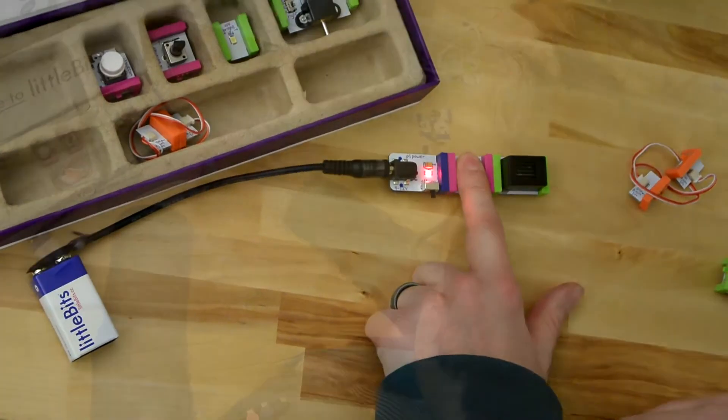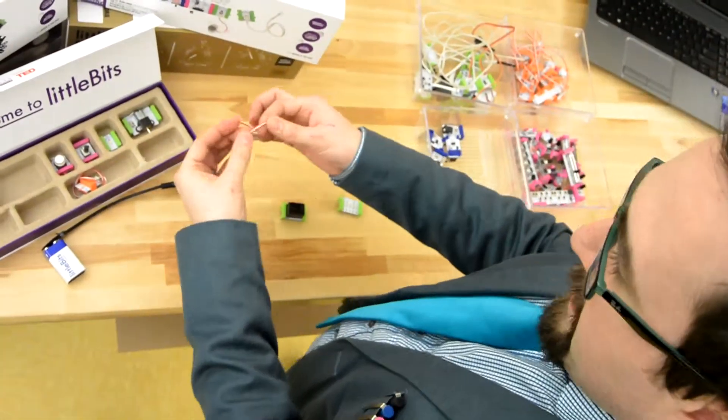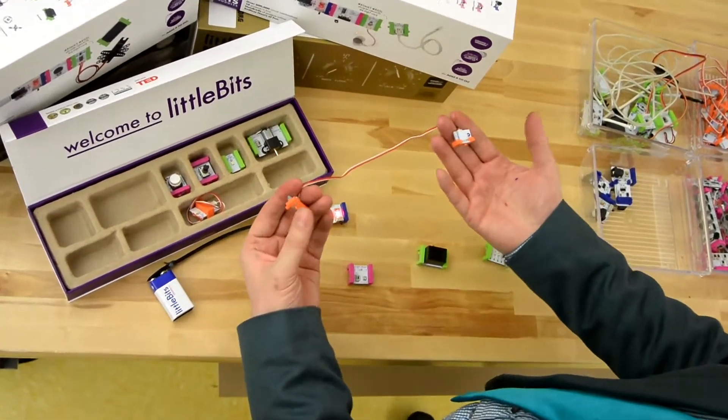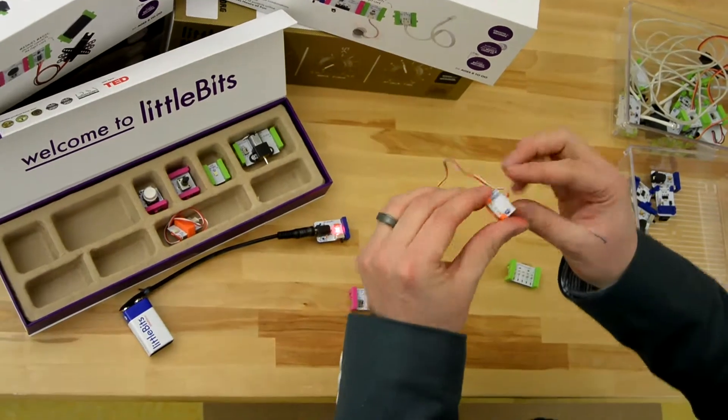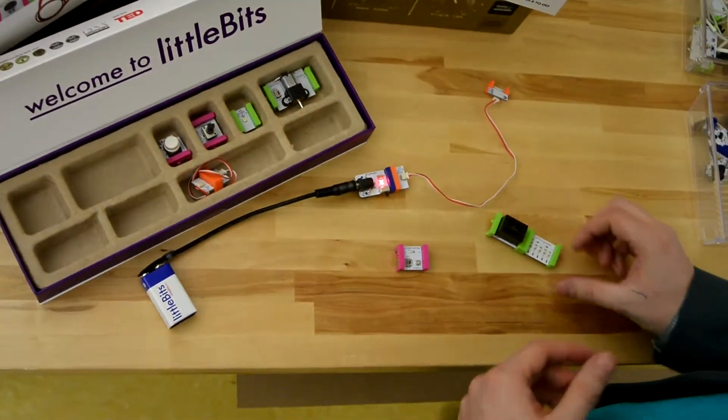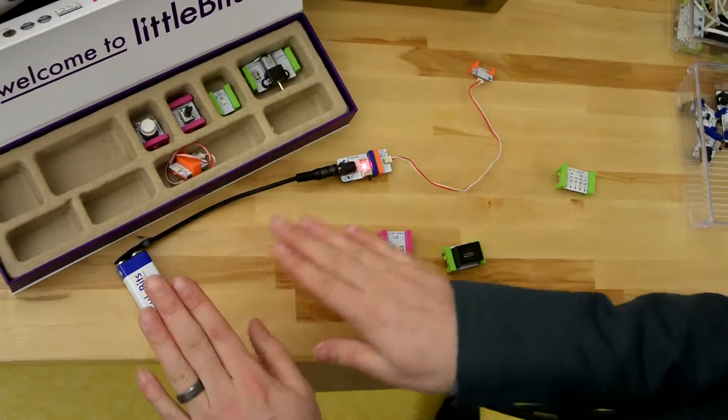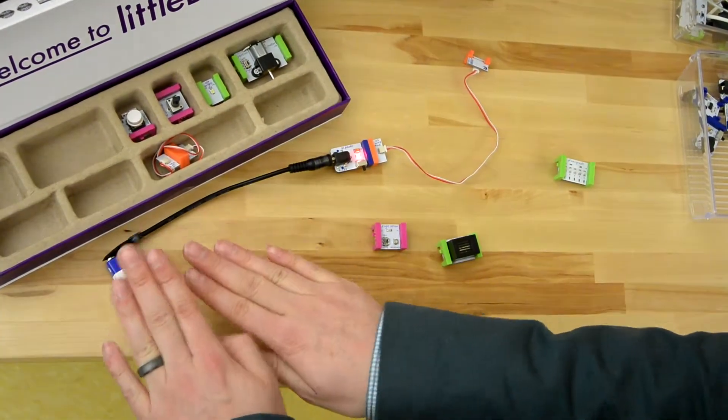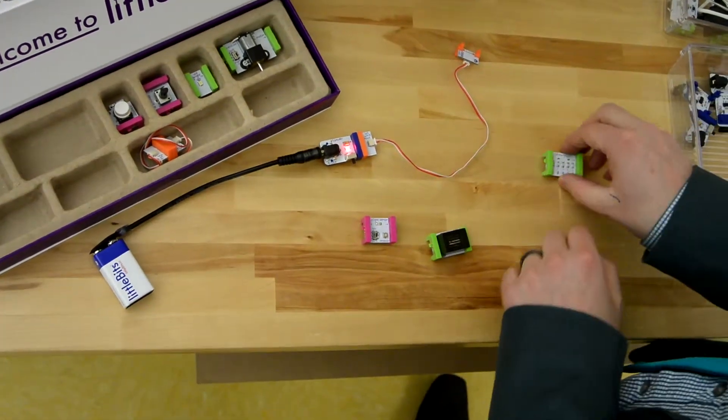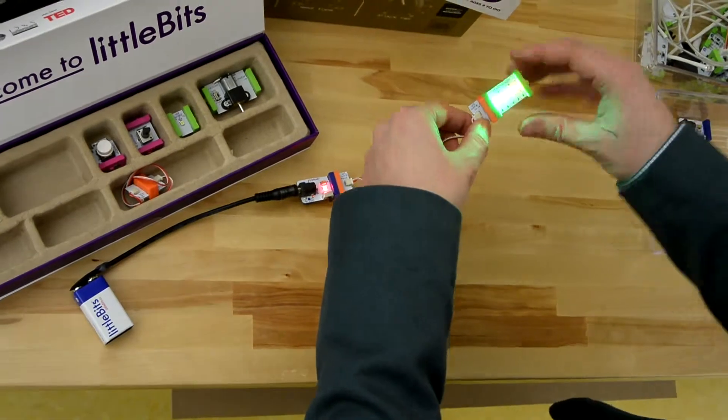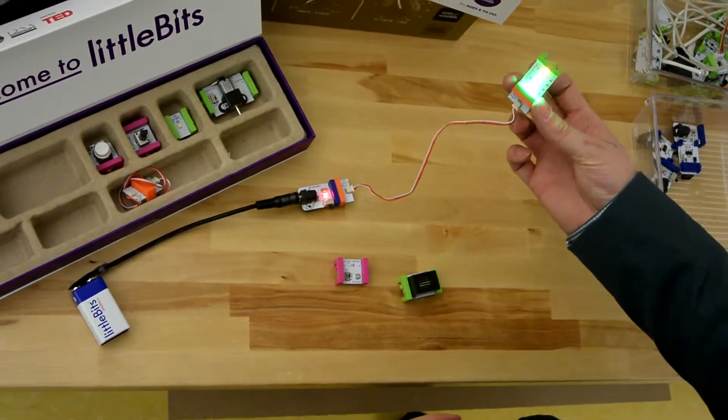So imagine all the things that you can make. And then finally, the orange bits allow you to extend your circuits, and you're going to want to be able to do this, especially when you create more complex designs, such as wiring a doorbell. You may not want your littleBit power source to be directly next to your LEDs. And so these wires, you can extend your circuits to any length that you want.